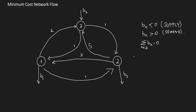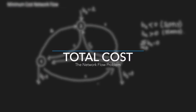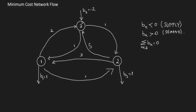So b1 plus b2 plus b3 equals zero. Let's say b3 is minus two — two units per time coming from outside the network — which means b1 plus b2 must add up to two. Let's say b1 demands one unit and b2 demands one unit. The problem is: what is the path we should use to push units from three to one and two so that the total transportation cost is minimized?